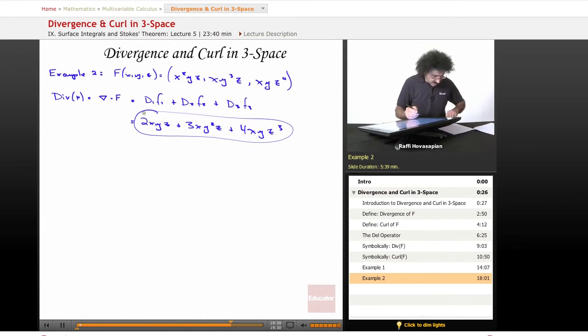Okay, so now let's go ahead and do the curl of the vector field. The curl of this vector field is equal to del cross f. Del cross f is symbolic, so it's going to be i, j, k. Let's do capital denotation here, d1, d2, d3, and we have x squared yz, we have xy cubed z, and we have xyz to the fourth.